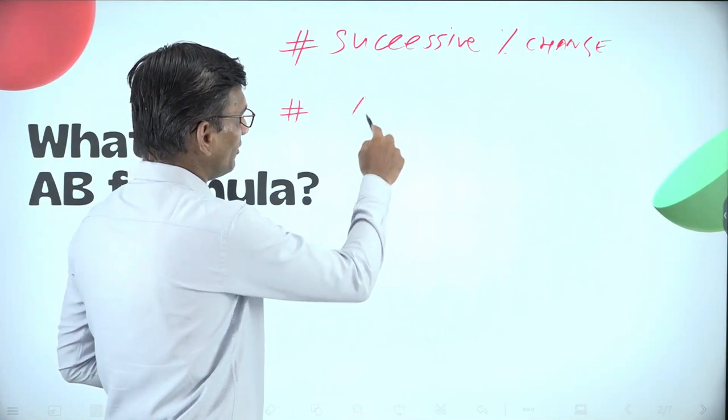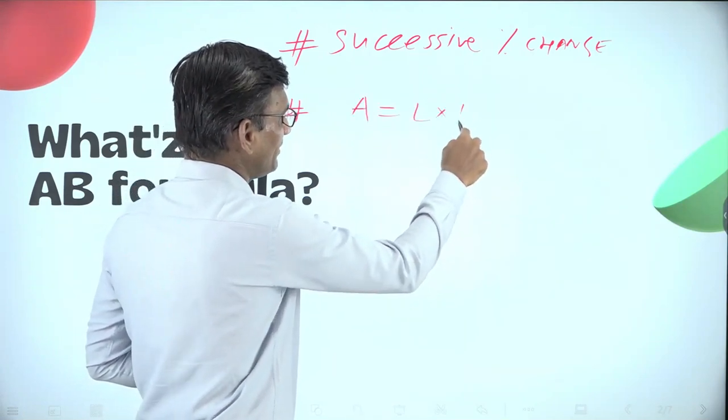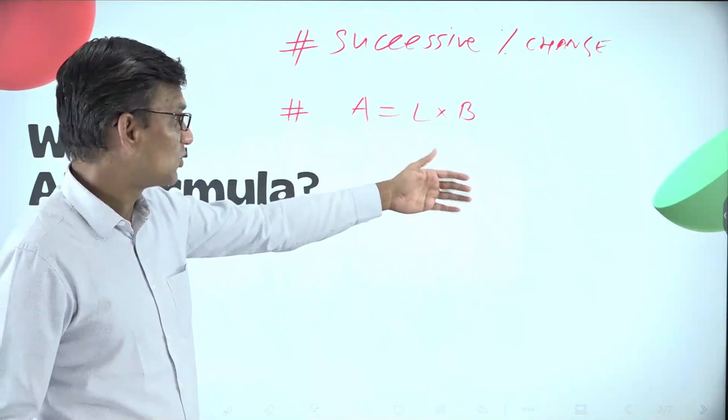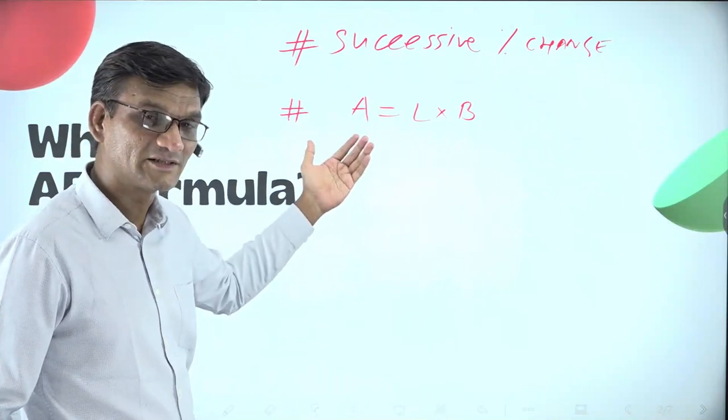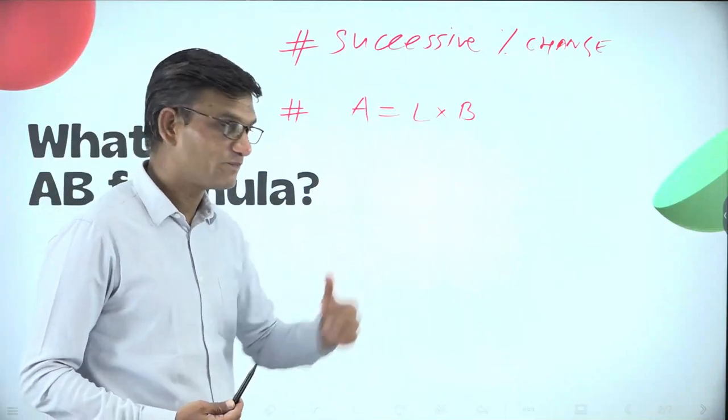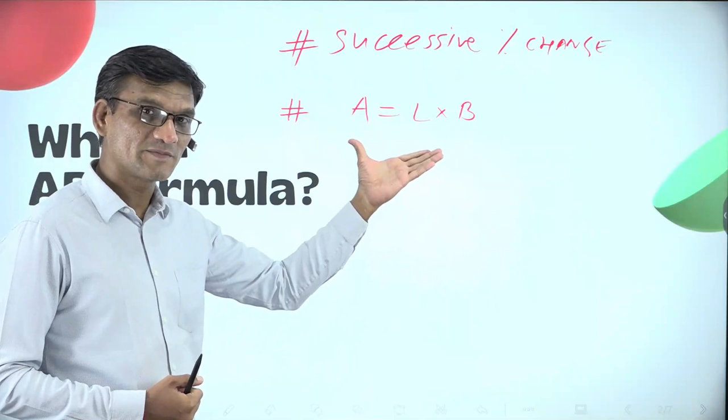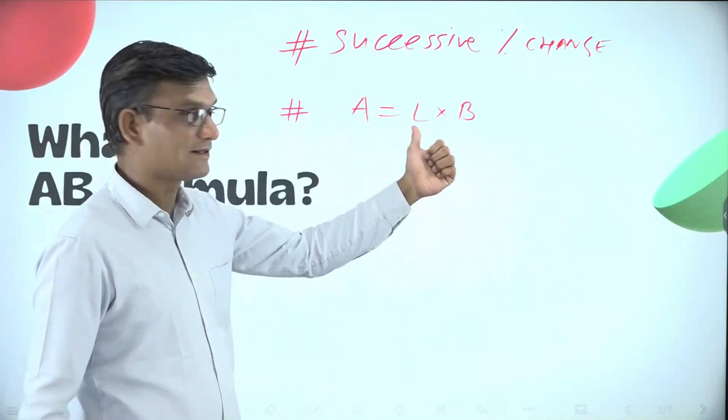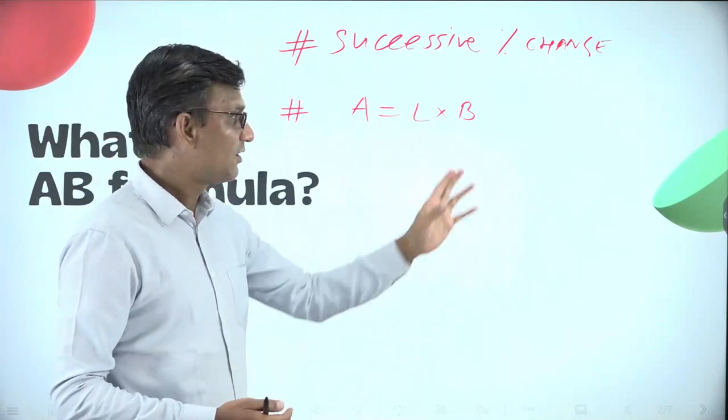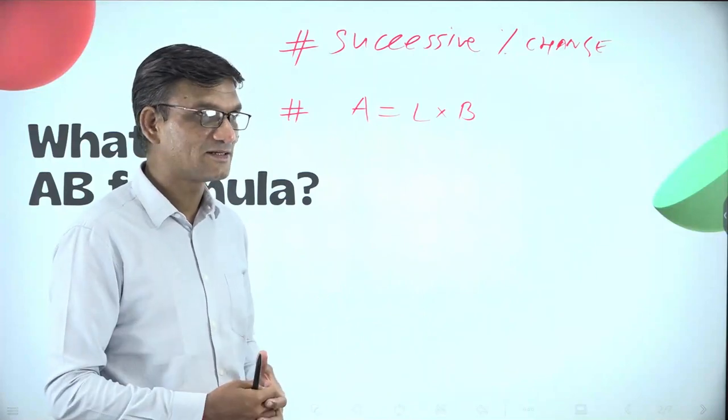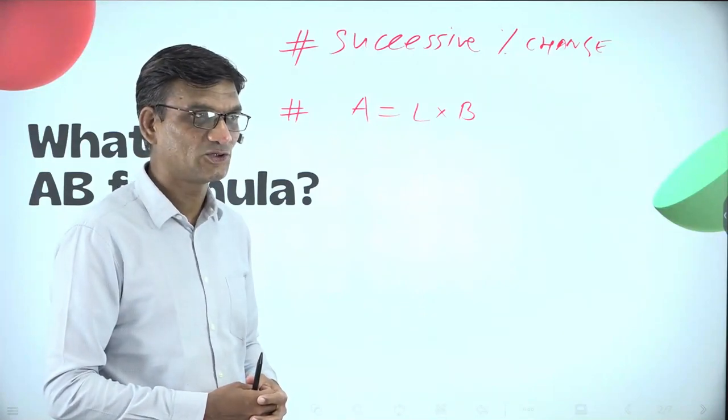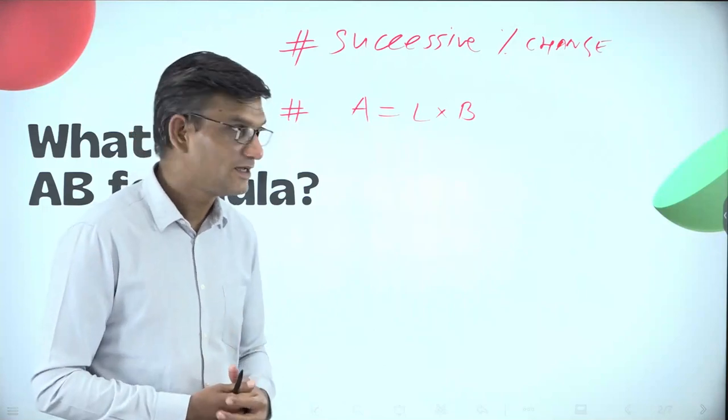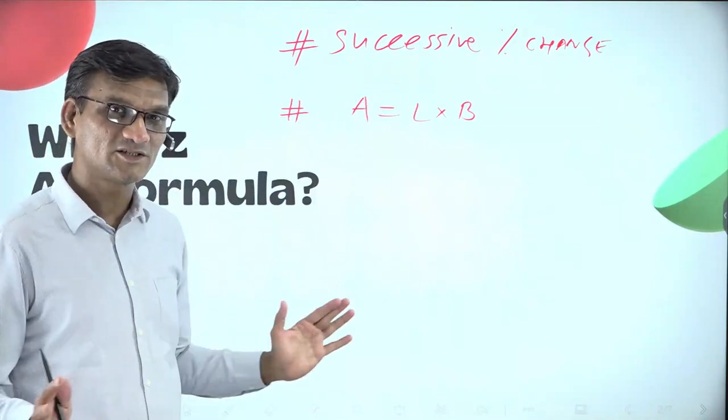For example, if population of a city or country increases by some percentage in one year, and then another percentage in the second year - successive growth or decrease is happening. This is called successive percentage change. So when successive percentage change is happening in any parameter like price, population, anything, you can use this formula.